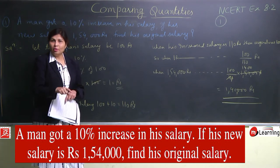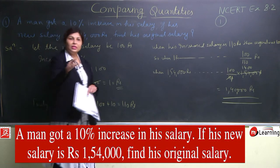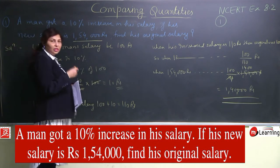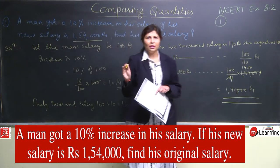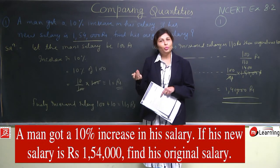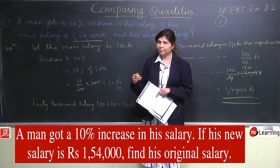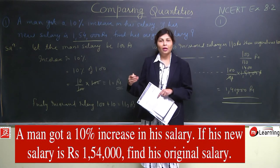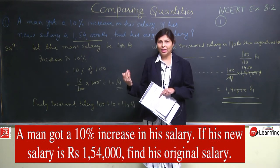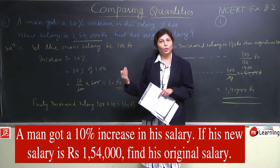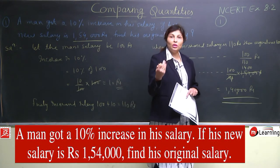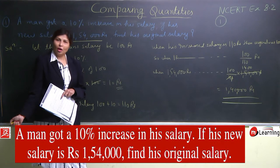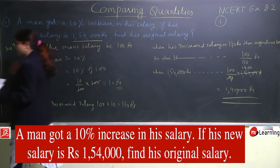Us pe uski company ne 10% ka increment diya, and 10% ke increment dene ke baad he got 1,54,000. Ek baar wapas se revise kara deti hoon: humne uski salary 100 rupees li, 10 rupees increase hue to salary 110 ho gayi. Equation lagai: jab 110 rupees increased salary hai, tab actual 100 thi; so 1,54,000 ki actual salary = 100/110 × 1,54,000 = 1,40,000 rupees. Practice karte karte aap ise aur short steps mein kar sakte hain.